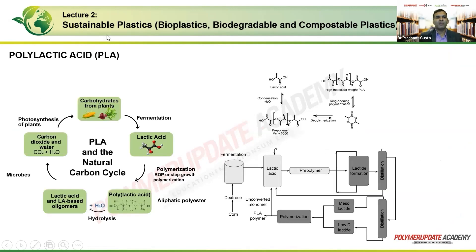Polylactic acid (PLA) follows a circular natural carbon cycle. Carbohydrates are extracted from plants, fermented to produce lactic acid as the monomer, and then polymerized via step-growth condensation polymerization to form an aliphatic polyester. Adding water causes hydrolysis back into lactic acid and low molecular weight oligomers. When microorganisms attack these oligomers and monomers, they convert them into carbon dioxide and water. Photosynthesis then allows plants to consume the CO₂ and water, producing new plants and continuing the natural cycle.